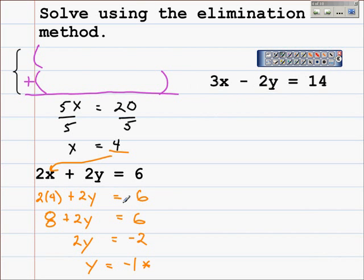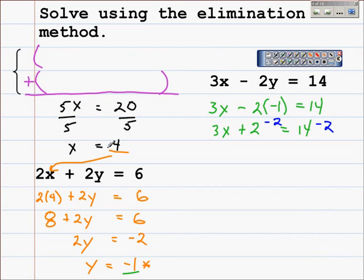Remember we're substituting negative 1 in for y, so that'll give us 3x minus 2 times negative 1 equals 14. Simplify this; that'll give me plus 2 here. So we'll have 3x plus 2 equals 14. Subtracting 2 from both sides—here's a different way to show it. Over here I'm showing the work a little bit differently, subtracting 2 from both sides. That'll give 3x equals 12. Dividing both sides by 3, that'll give x equals 4. So our solution here is going to be x equals 4, y equals negative 1.